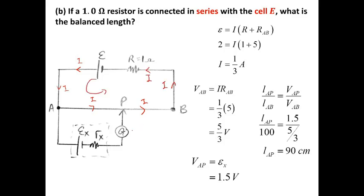But below, when the balance length is achieved, there is no current at the bottom. So IR also equals zero here. At the top, we apply Ohm's law: EMF equals current times resistance R plus resistance AB. Substituting the values, we get the current that flows in the top circuit. Then VAB equals current I times resistance AB, and we get the voltage for VAB.